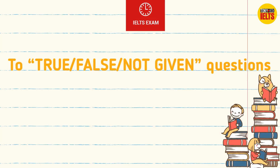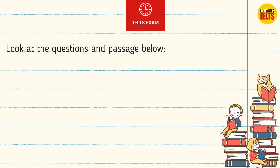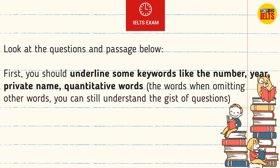True-False-Not-Given questions: look at the questions and passage below. First, you should underline some key words like numbers, years, proper names, quantitative words — the words where, even if you omit other words, you can still understand the gist of the question.